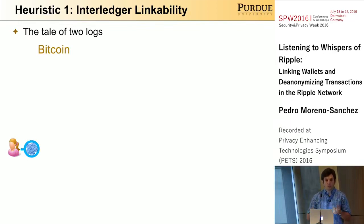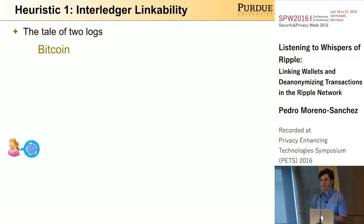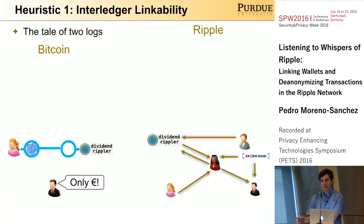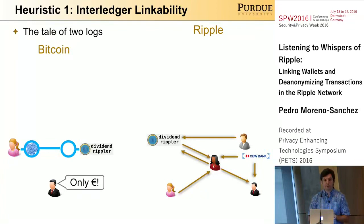The idea of the first heuristic is that we want to link wallets from different systems that belong to the same user. Imagine that Alice has some Bitcoin in the Bitcoin system and she wants to pay Bob for some service. However, Bob wants to receive the payment in euros. What she can do is take the Bitcoins, transfer them into the Ripple network, and then perform an inter-currency transaction. To do that, she can use what is called a Ripple gateway.